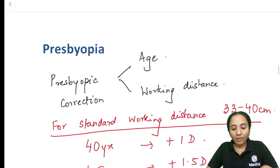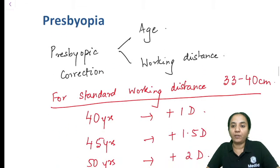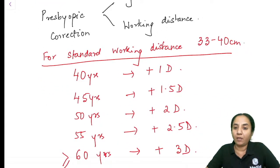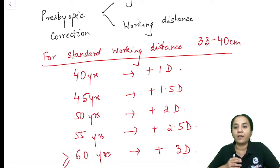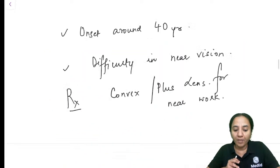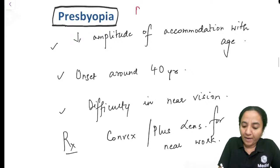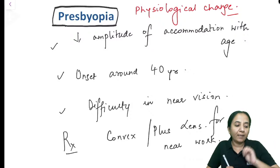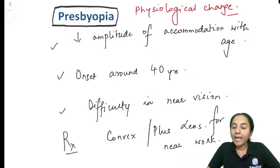So far we have discussed refraction in the normal eye — refraction of distant and near rays — and presbyopia, which is a physiological change, not an error of refraction. Now let's move on to the optics of the different types of refractive errors.